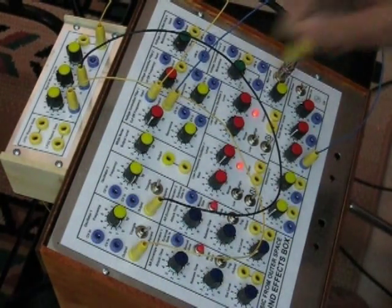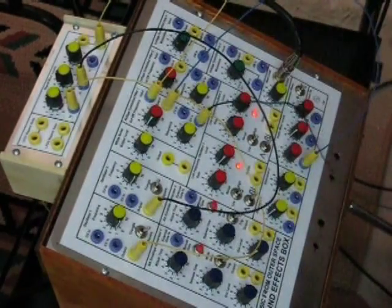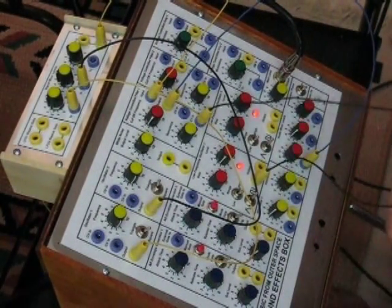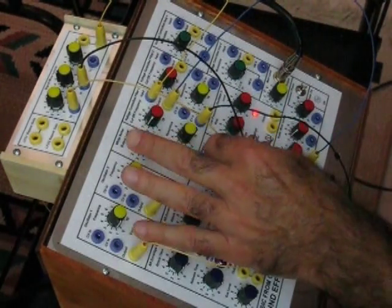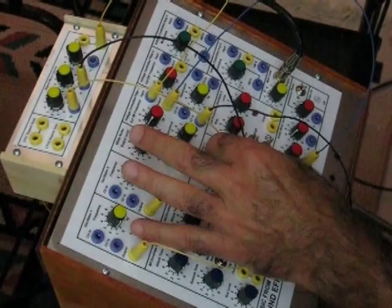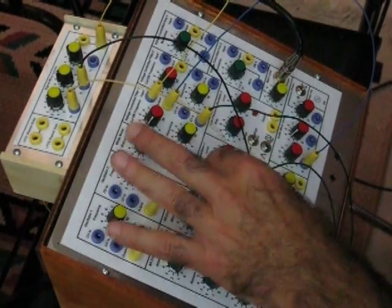Now, if we wanted to modulate this with the output of the LFO, we just take the LFO's output, plug it into the control voltage, and set the level of modulation that we want. And the rate.